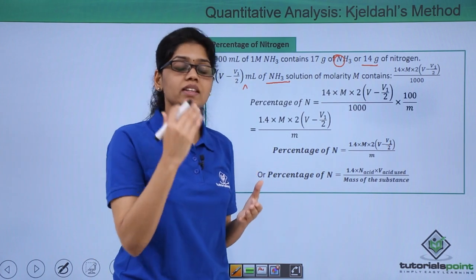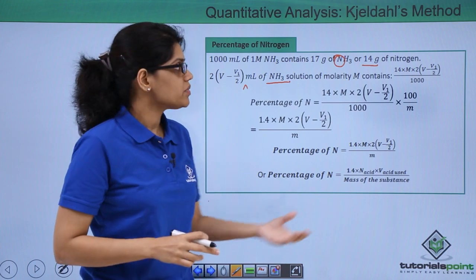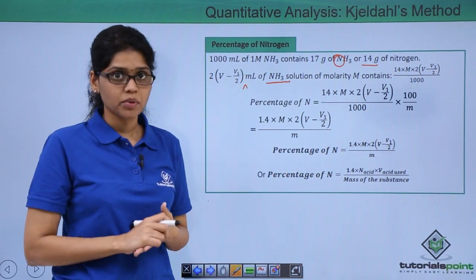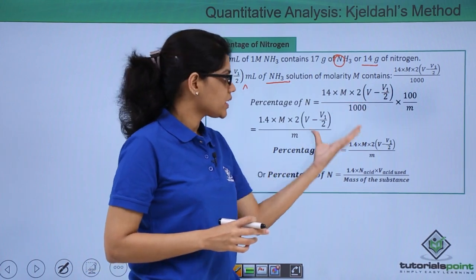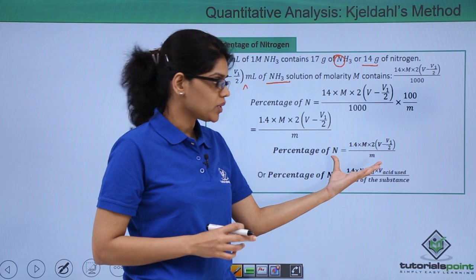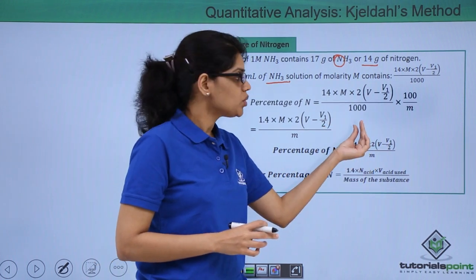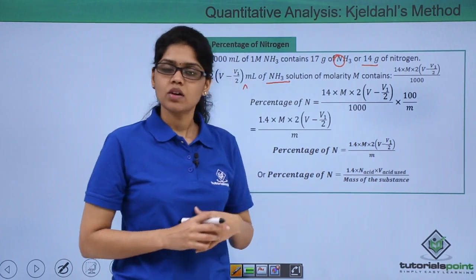Deriving or determining the percentage of nitrogen in organic compound is very easy because we have to simply divide this value by the total mass of the organic compound and multiply it by 100. On simplifying you will get the percentage of nitrogen formula as 1.4 × M × 2(V - V1/2) / m, where m is the total mass of the organic compound.